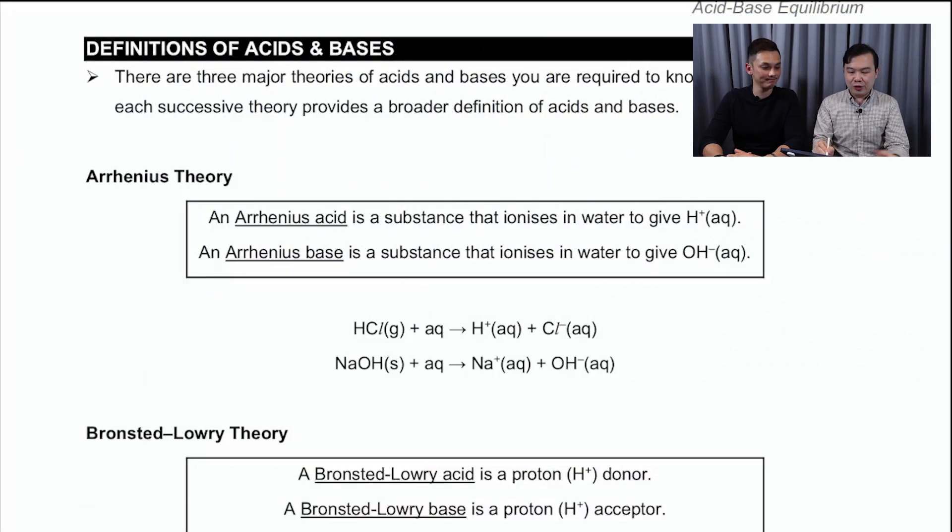Let's zoom into the notes. Now, the first definition that we talk about is the Arrhenius definition from O levels. So we say that if you dissolve in water to release me an H+, that's called an Arrhenius acid. And conversely, if you dissolve in water to give you OH-, that's going to be called an Arrhenius base. So the classic example of an Arrhenius acid would be HCl because you notice that when it dissolves in water, it ionizes to give me an H+. Conversely, the popular base is NaOH, which dissolves in water to give me OH-. This is the Arrhenius definition.